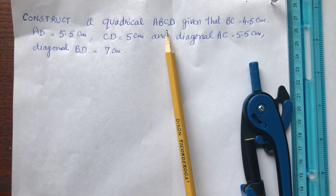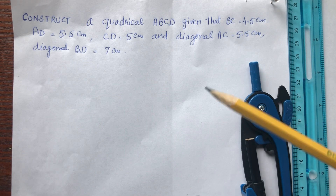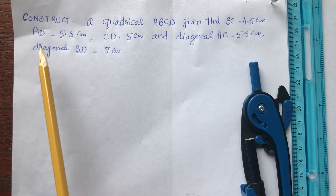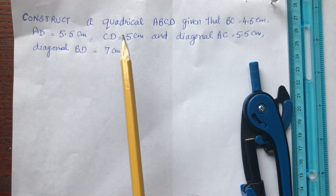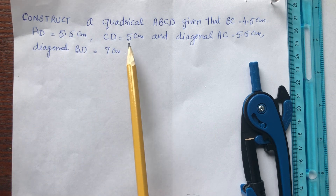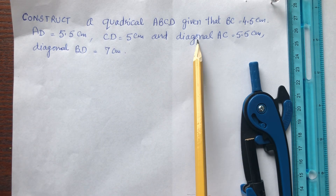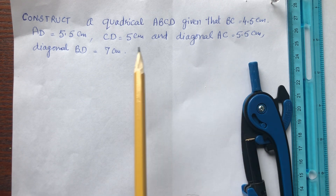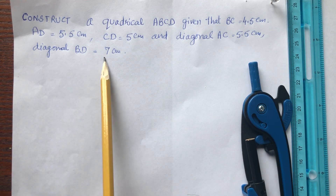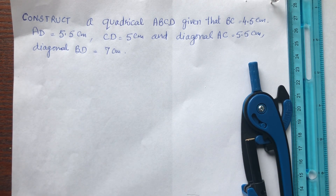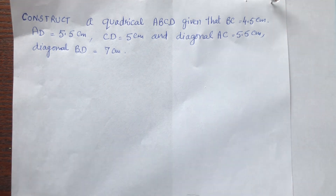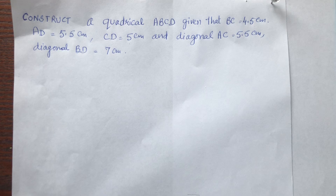We can take the example: construct a quadrilateral ABCD given that BC is equal to 4.5 centimeters, AD is equal to 5.5 centimeters, CD is equal to 5 centimeters, and two diagonals — AC is equal to 5.5 centimeters and diagonal BD is equal to 7 centimeters.